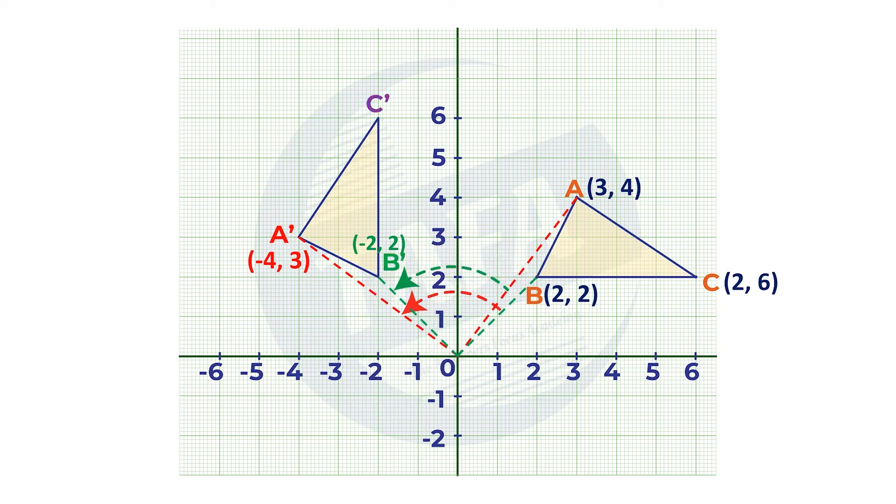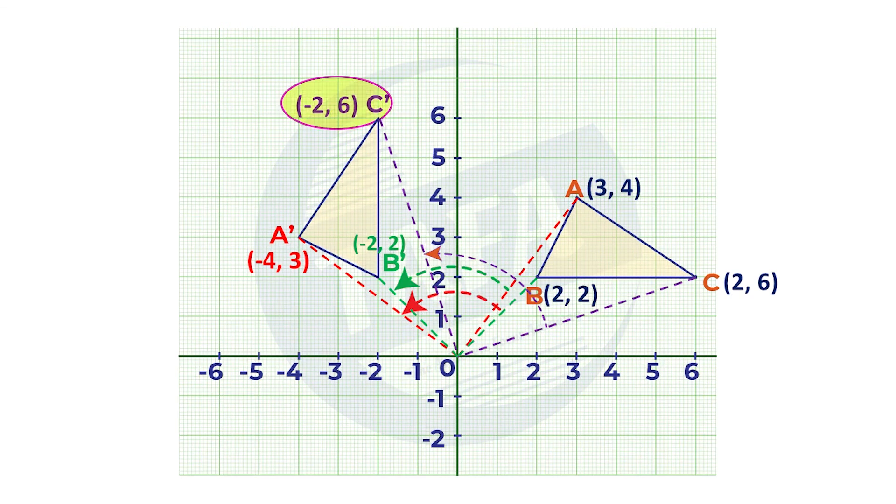To locate C prime, which is the image of C, you join O to C with a straight line. Then you measure 90 degrees in anti-clockwise direction, you put a mark where you have 90 degrees, then you draw a line passing through point O. Measuring the distance from O to C and transferring the same distance from O to C prime, you locate C prime on coordinate negative two six.